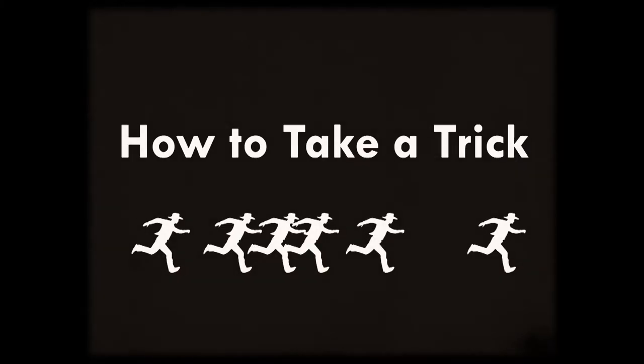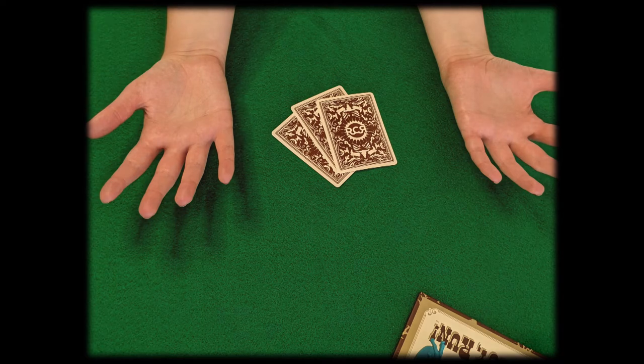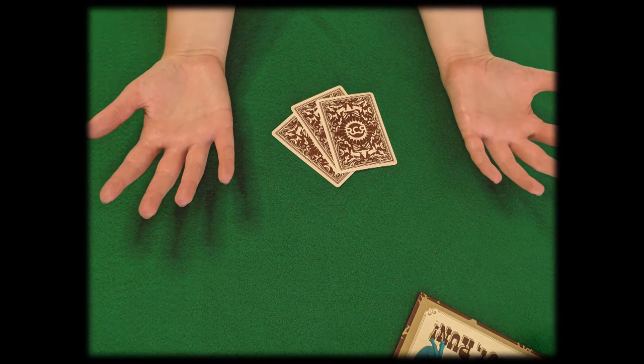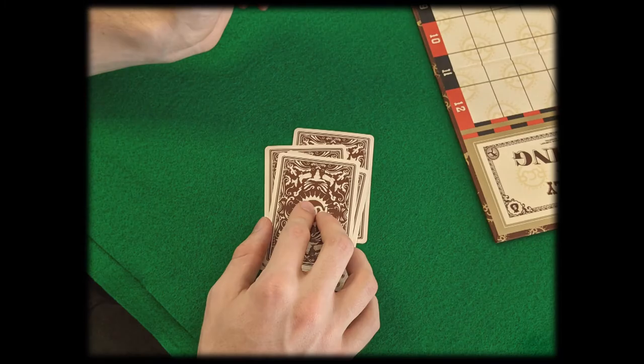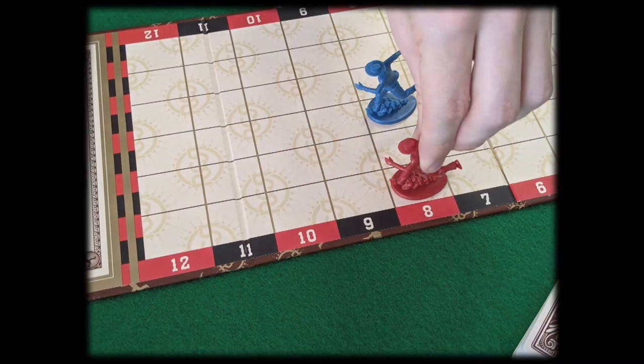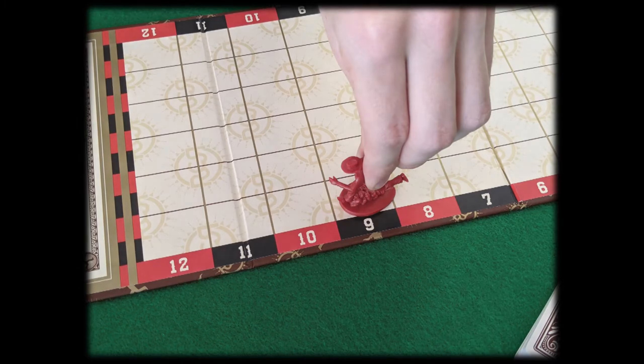How to take a trick. If the next player cannot or does not play a card on their turn, you take the trick. You take all the cards in the discard pile and set them aside. You score a point and move your cowboy one space on the board.